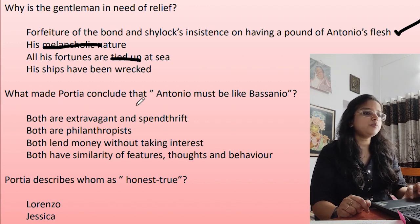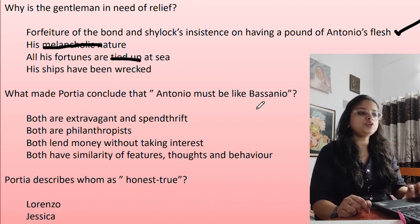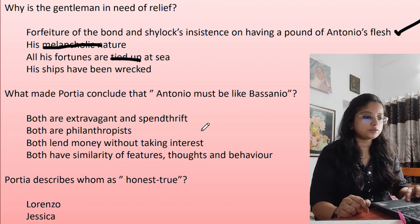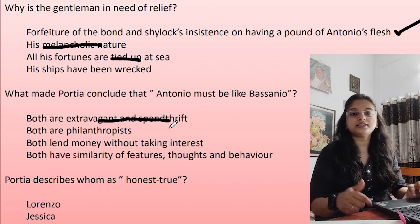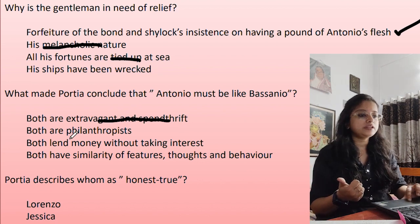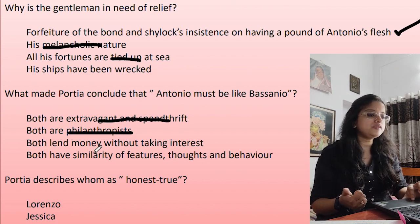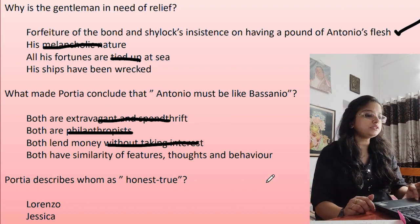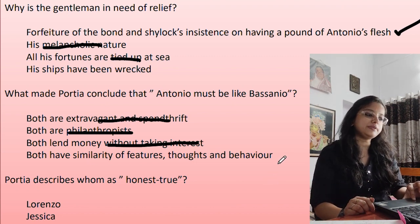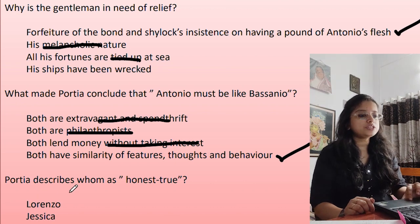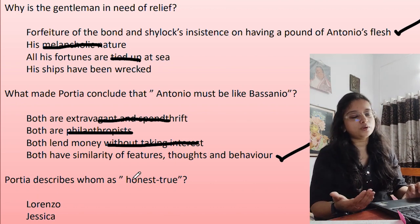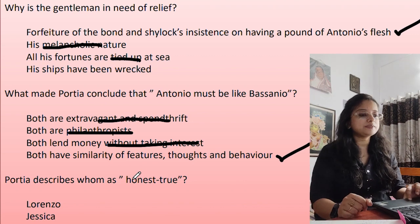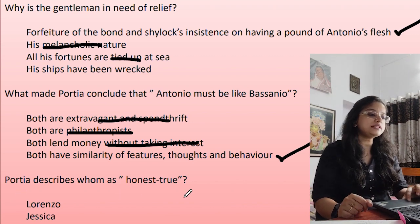What made Portia conclude that Antonio must be like Bassanio? Both being extravagant and spendthrift are negative qualities — Portia only speaks of positive ones. 'Philanthropists who lend money without interest' is incorrect since Bassanio has no money of his own. The correct answer is that both have similarity of features, thoughts, and behavior. Use the elimination rule — it makes MCQs much easier to solve.